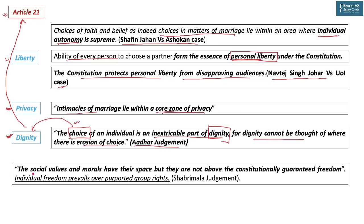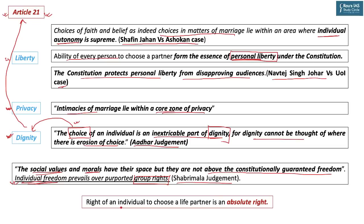The Supreme Court recognized the importance of social values and morality but stated they are not above constitutionally guaranteed freedoms. In various judgments including Sabarimala, the court said individual freedom prevails over purported group rights. The legal jurisprudence of India is thus moving toward safeguarding individual rights, individual freedom, and individual liberty over prevailing social morality. The right of an individual to choose a life partner is an absolute right — being absolute, it cannot be violated even for social conformity.